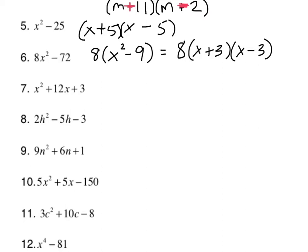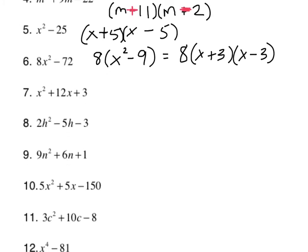GCF anywhere? x squared, 12x, 3. Nope. No GCF. All right. Factors of 3 that add up to 12. Well, obviously, very quickly, we're going to realize that that's not possible. Because 3 is prime. So it only has the factors 1 and 3. And 1 plus 3 would never give me 12. It's only going to give me 4. So that one, again, use the pen tool, Ms. Lecomte. That one is prime. Can't factor it.